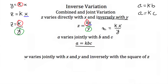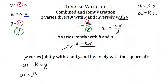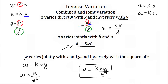If w varies jointly with x and y, and inversely with the square of z — what does the equation look like? We always include our constant of variation k. w varying jointly with x and y means w equals k times x times y. w varying inversely with the square of z means z squared is in the denominator. Combining them, w is equal to k times xy all over z squared. That completes the tutorial on inverse variation.